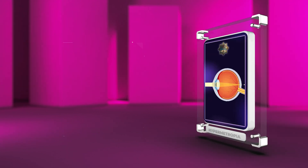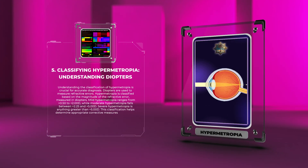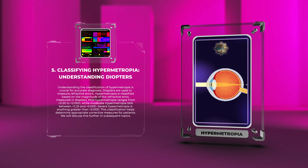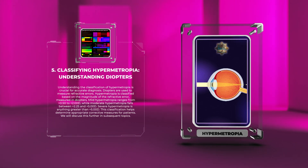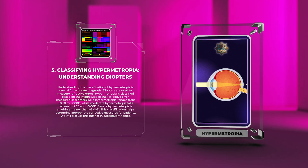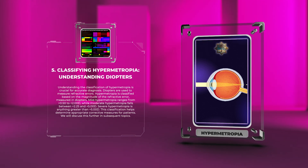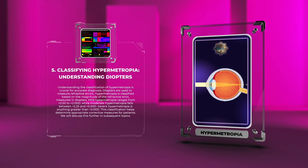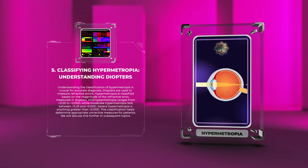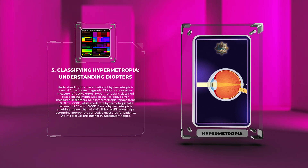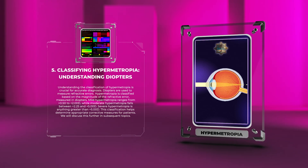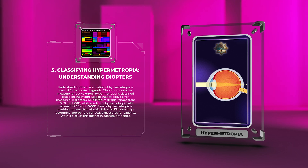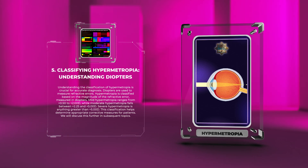Understanding the classification of hypermetropia is crucial for accurate diagnosis. Diopters are used to measure refractive errors. Hypermetropia is classified based on the magnitude of the refractive error: mild hypermetropia ranges from +0.50 to +2.00D, moderate hypermetropia falls between +2.25 and +5.00D, and severe hypermetropia is anything greater than +5.00D. This classification helps determine appropriate corrective measures for patients.